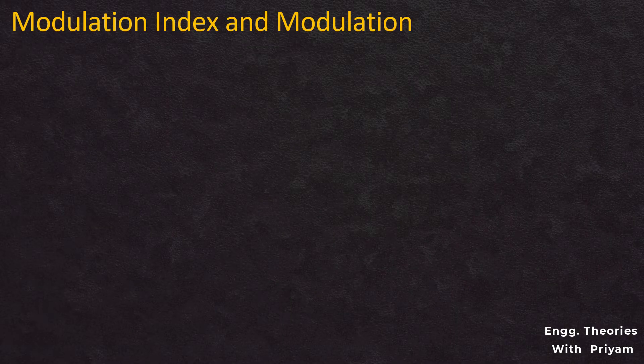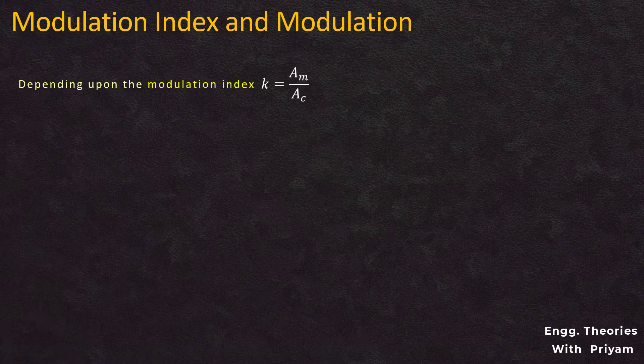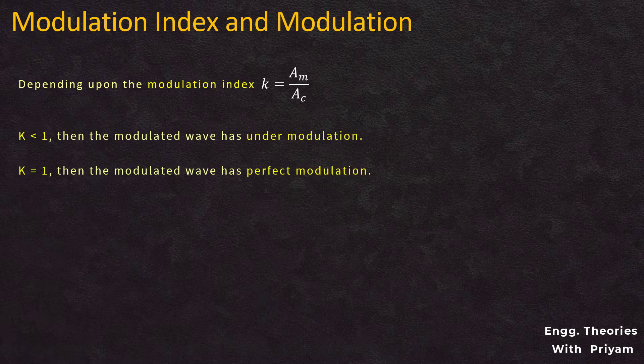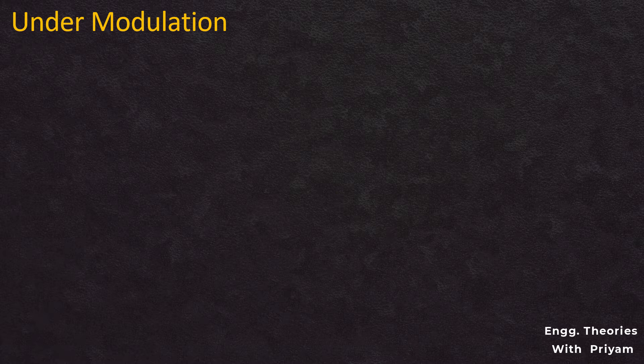Depending on the value of the modulation index k: if k < 1, the modulated wave has under modulation; if k = 1, the modulated wave has perfect modulation; and if k > 1, the modulated wave has over modulation. Now we will understand what under, perfect, and over modulation mean.